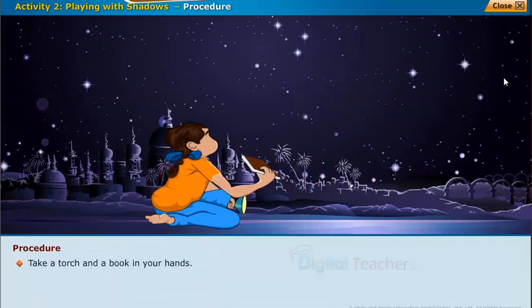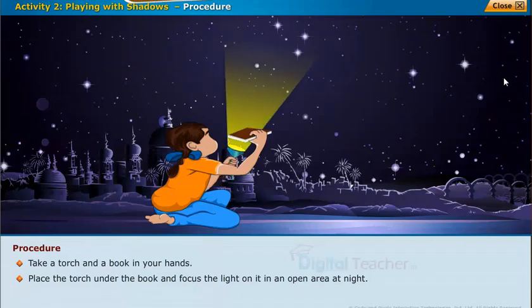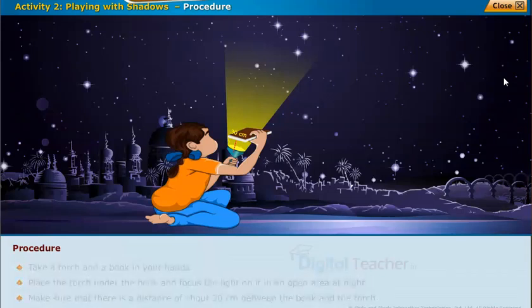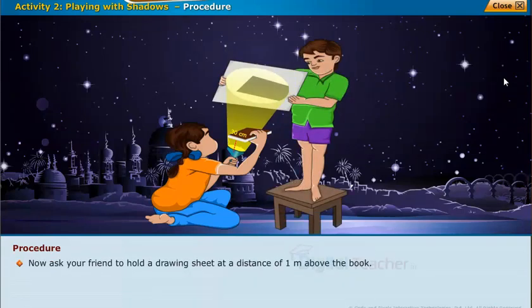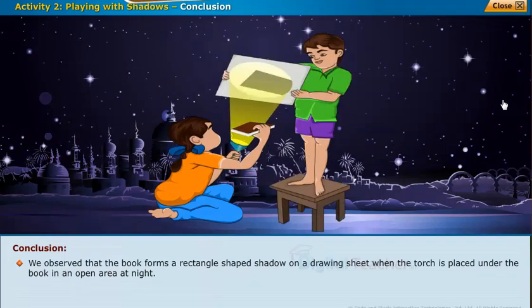Procedure: Take a torch and a book in your hands. Place the torch under the book and focus the light on it in an open area at night. Make sure that there is a distance of about 30 centimeters between the book and the torch. Now ask your friend to hold a drawing sheet at a distance of one meter above the book. Observe the shadow of the book. Conclusion: We observed that the book forms a rectangle shaped shadow on a drawing sheet when the torch is placed under the book in an open area at night.